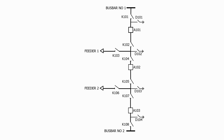Let's do a worked example. For the circuit shown, work out where the current transformers need to be to provide different protection zones to cover all of the busbars and equipment.